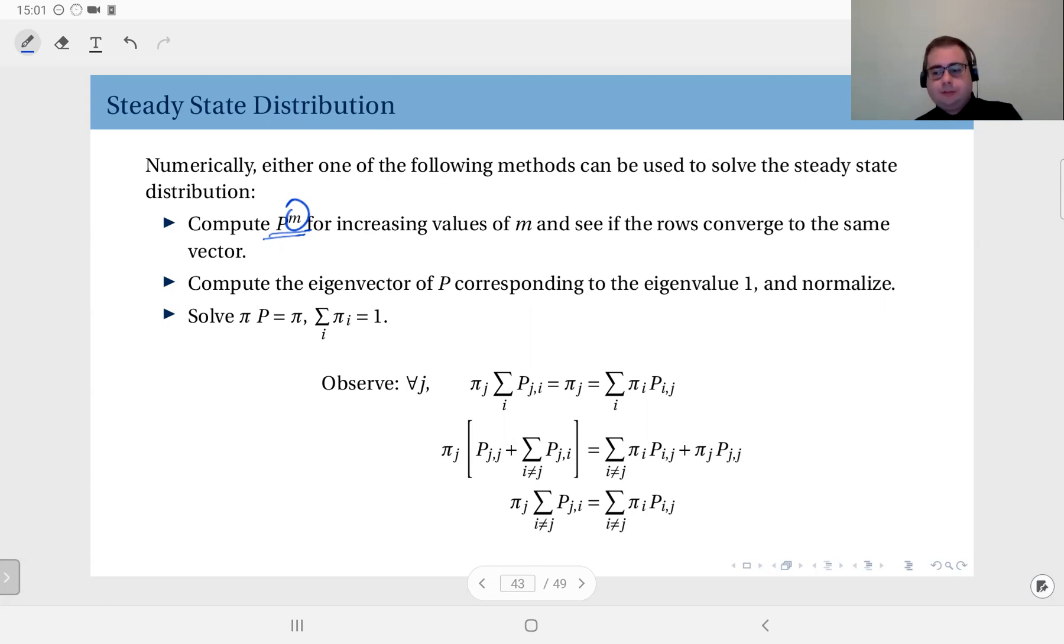That's one way to compute steady state distribution numerically. Another way is to compute the eigenvector of P, the left eigenvector corresponding to the eigenvalue 1, and then normalize it so that the sum is one.